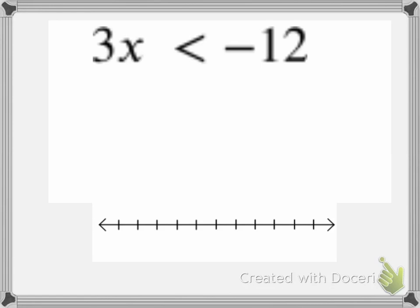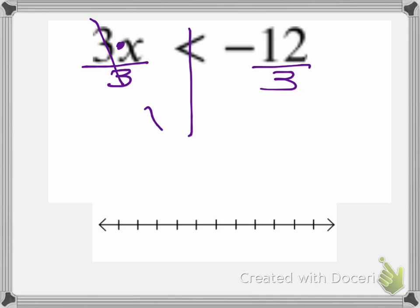My third example is 3x is less than negative 12. I'm going to solve that by putting my bar through my inequality sign. 3x means 3 multiply, or times, x. So the inverse operation is division — I'm going to divide both sides by 3. The 3s eliminate, so that gives me x. Bring down my inequality sign, less than, and negative 12 divided by 3 is negative 4. I'm going to put negative 4 in the center of my number line and go to the left: negative 5, negative 6, negative 7.